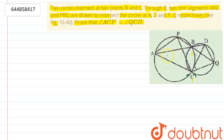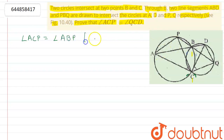Now, angle ACP is equal to angle ABP, because they are lying on the same line segment in the circumference of the circle. So we say that angle ACP is equal to angle ABP — lying on the same line segment.